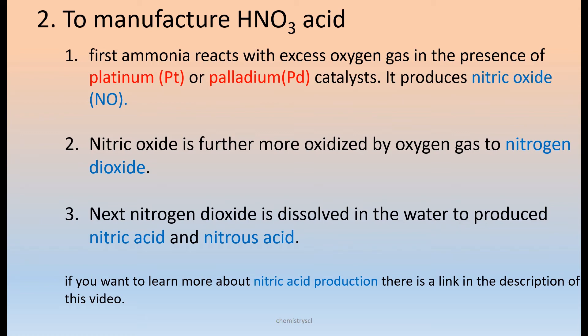Now let's see what is our second use — it is to manufacture nitric acid. First, ammonia reacts with excess oxygen gas in the presence of a platinum or palladium catalyst; it produces nitric oxide. Nitric oxide is furthermore oxidized by oxygen gas to nitrogen dioxide. Next, nitrogen dioxide is dissolved in water to produce nitric acid and nitrous acid. If you want to learn more about nitric acid production, there is a link in the description of this video.